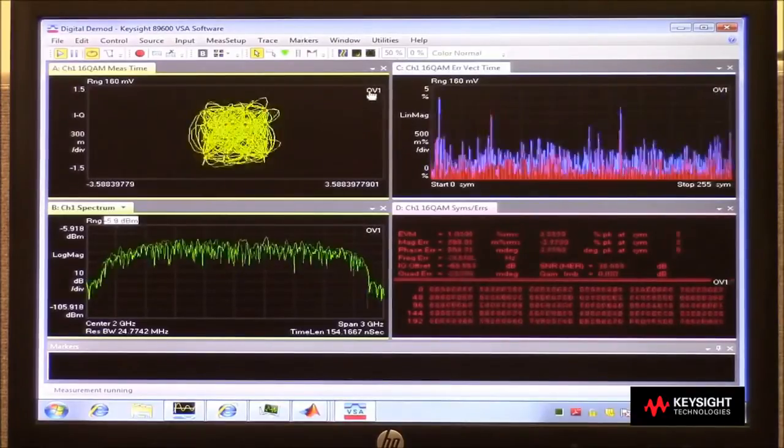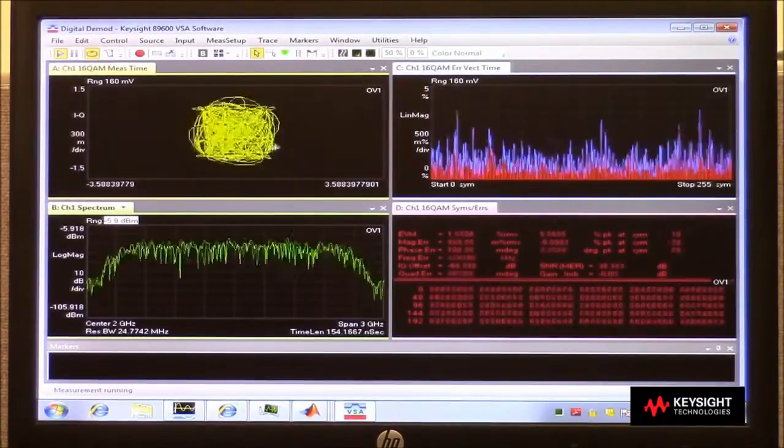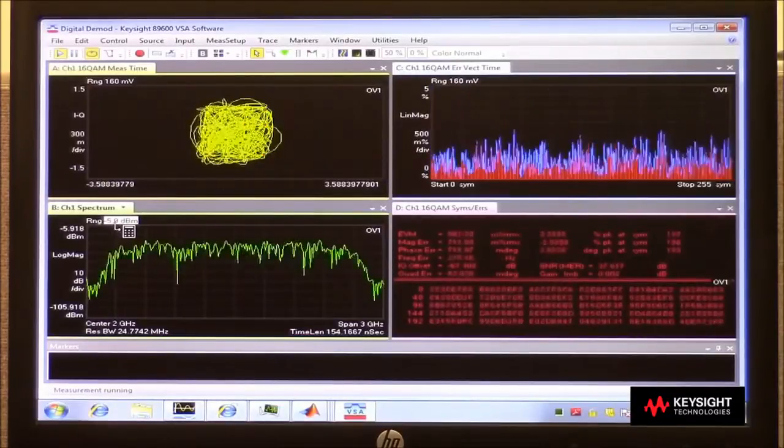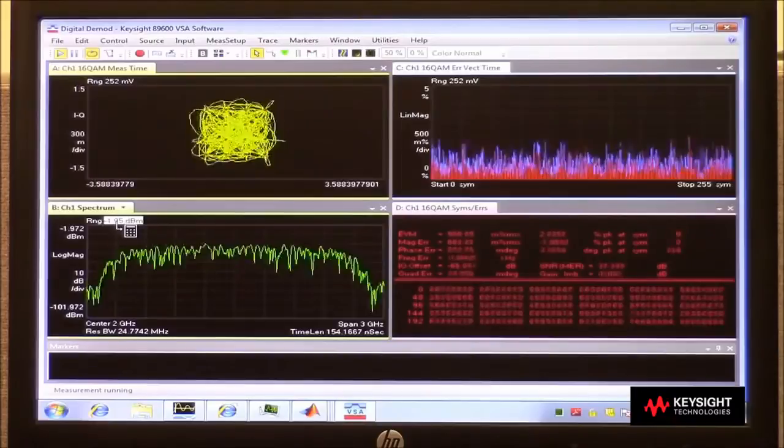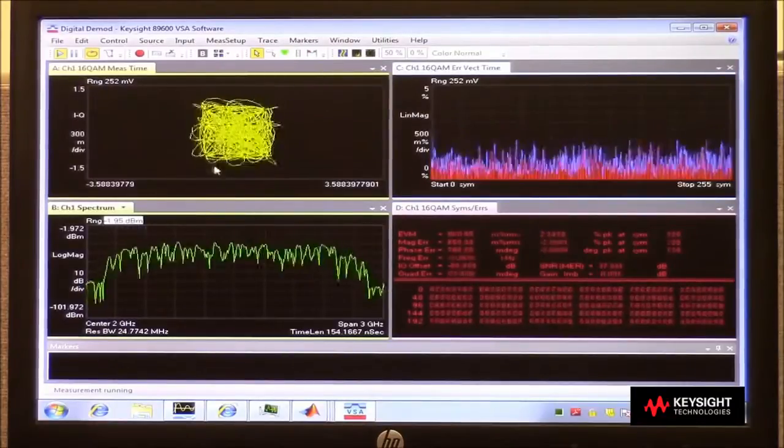I'll do this until I see a little indication of overload. Okay, right now I see OV1, that's overload. So I'm going to back off a step so that goes away. Alright, so this is the optimal sensitivity of the oscilloscope.